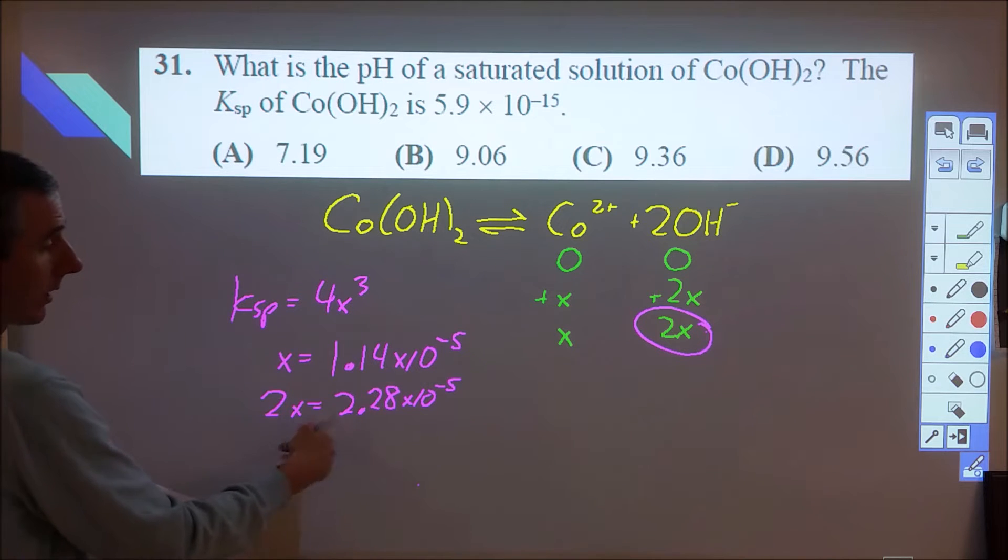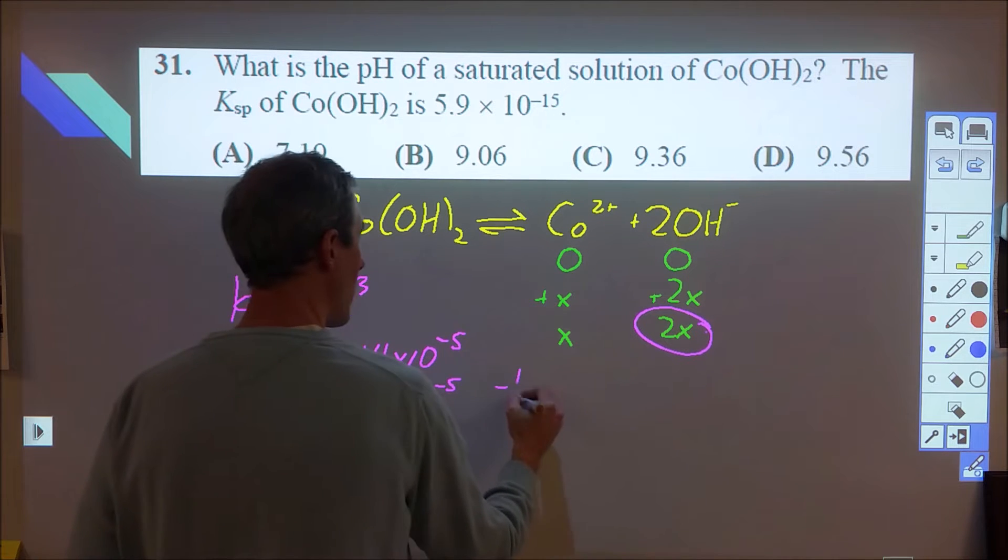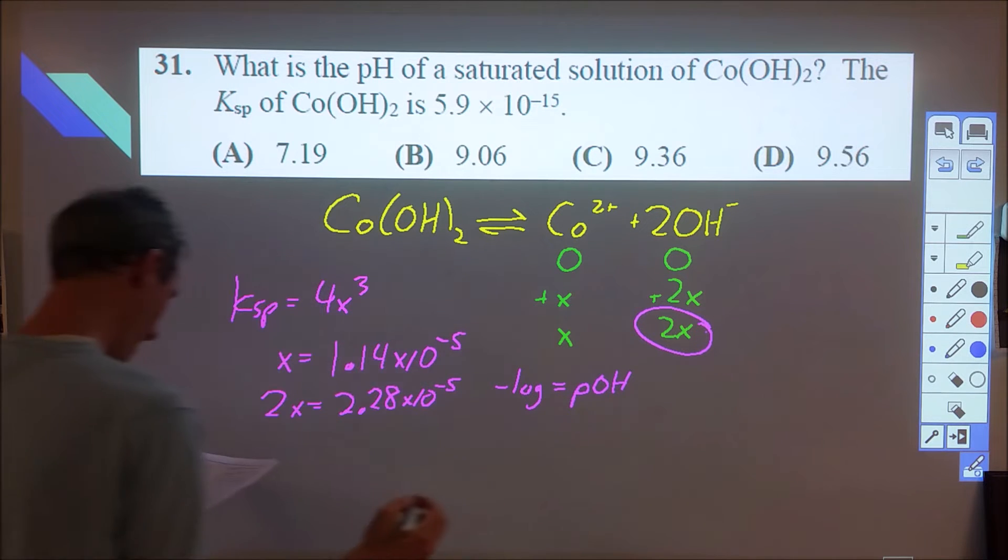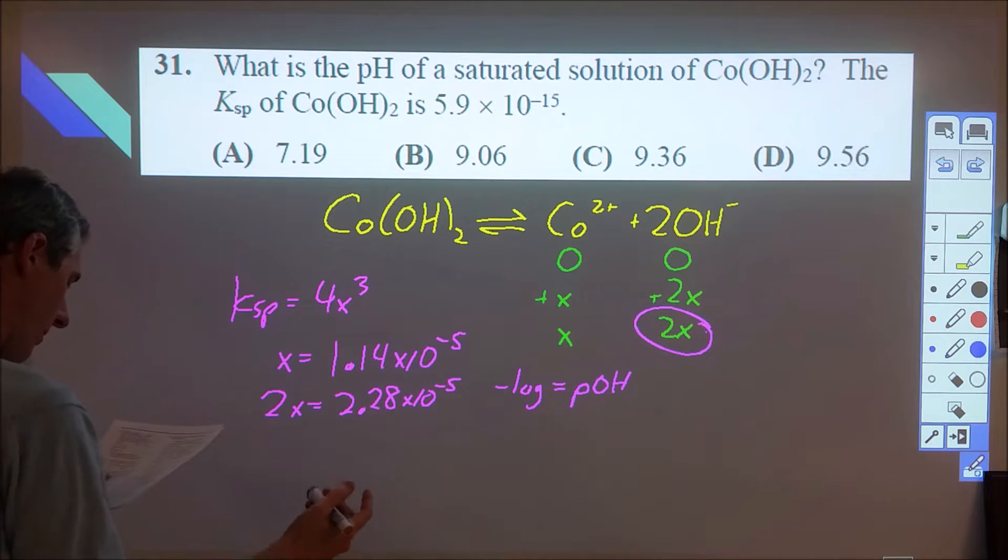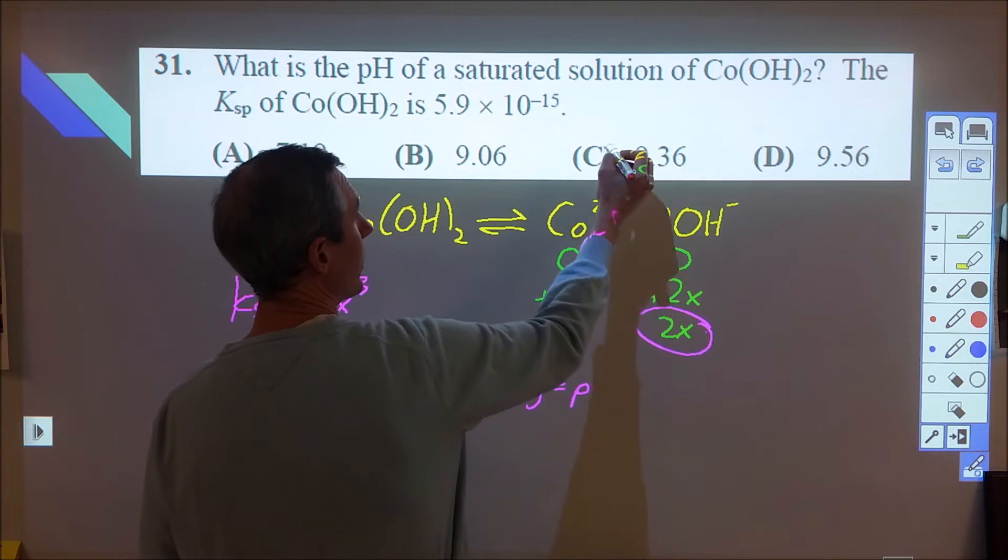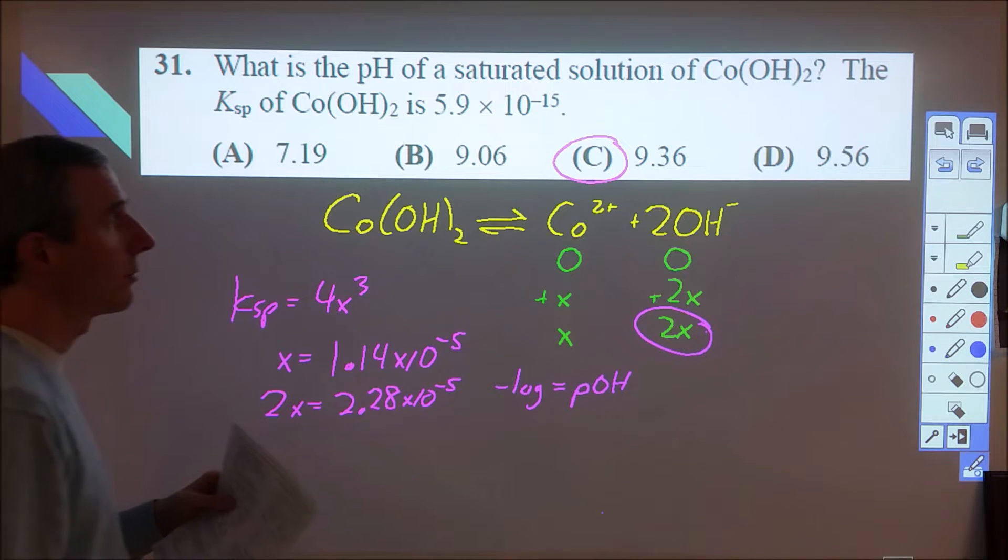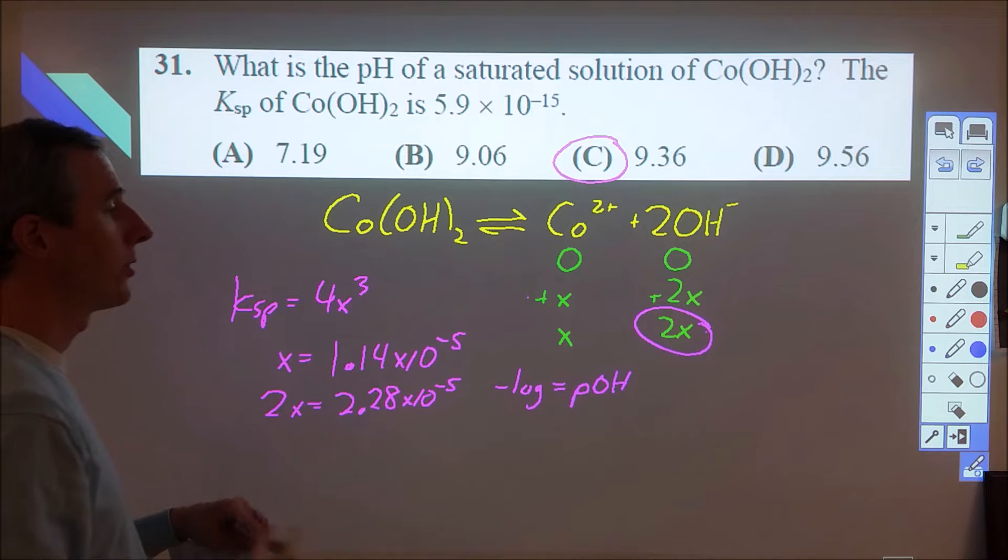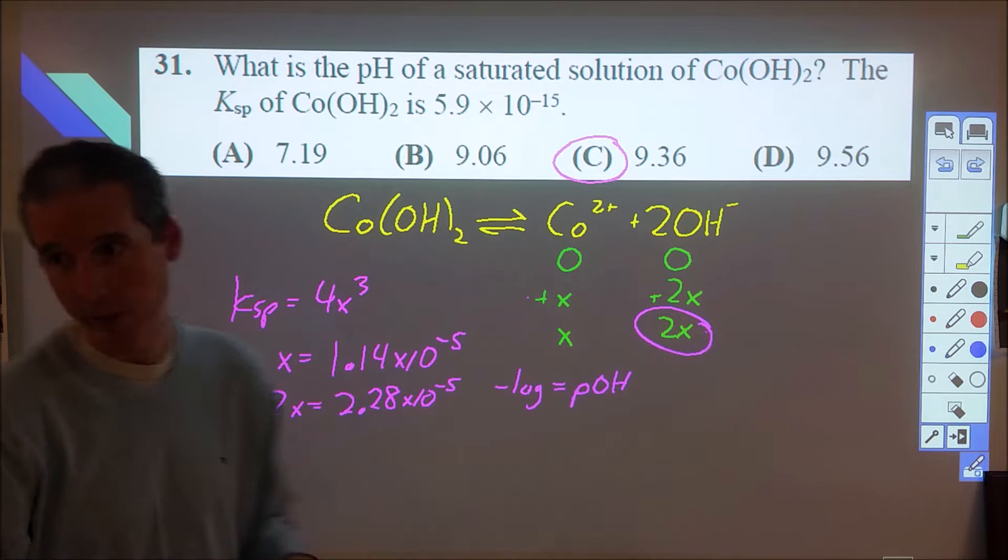If we then take the negative log of that 2x, that gives us our pOH, and that comes out to be 5.64. And then our pH would be complementary and add up to 14, which would be 9.36. You'll notice that B and D are both close because they're anticipating a lot of issues with forgetting that 2x and getting another answer.